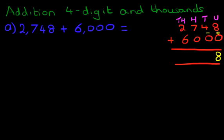The tens column, we'll go through this quickly because it's nice and simple. 4 plus 0 is 4. Hundreds column, 7 plus 0 is 7.